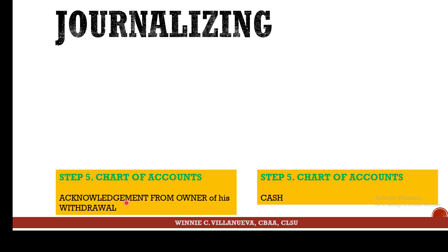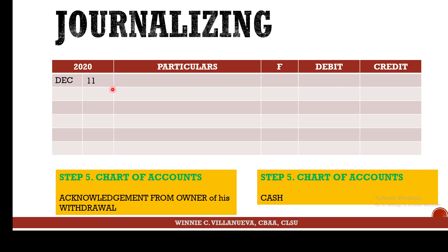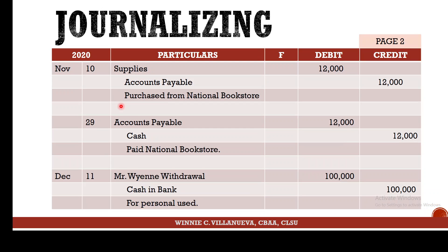The acknowledgement of the owner is called Withdrawal in the journal. The cash is still Cash. Date: December 11. Mr. Wayne, Withdrawal is debited when you receive the acknowledgement. The credit is Cash in Bank — for personal use. Amount: 100,000. This is how your page 2 will look: purchase of supplies on account, full payment, and owner's withdrawal.